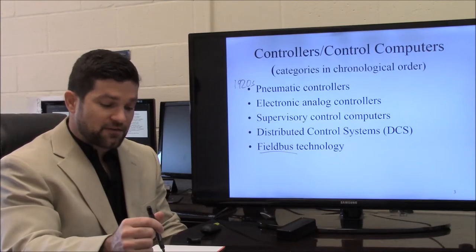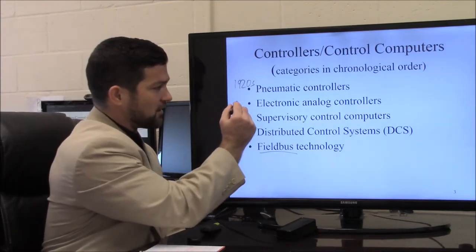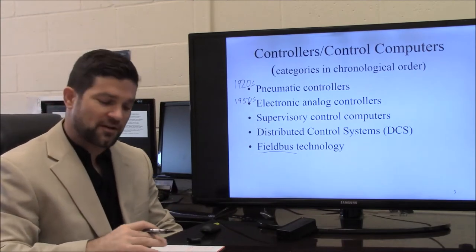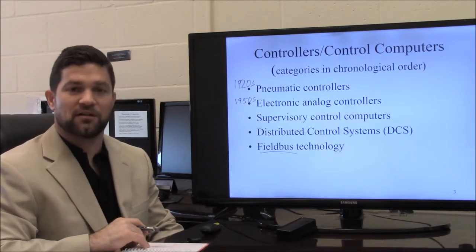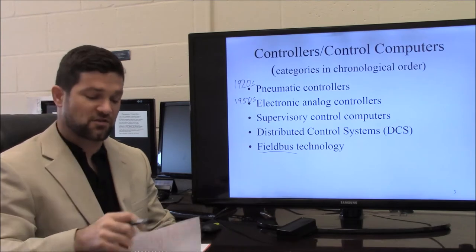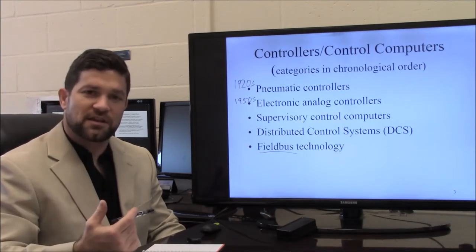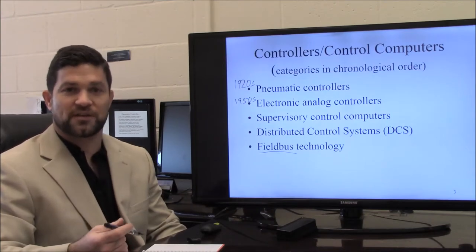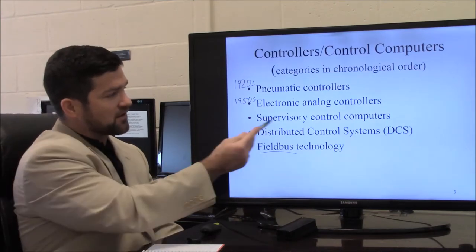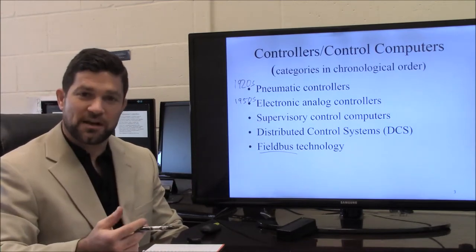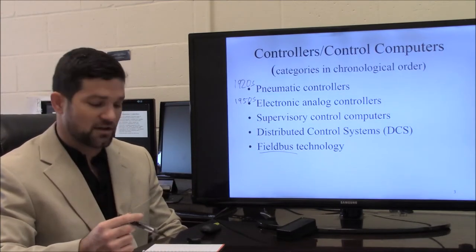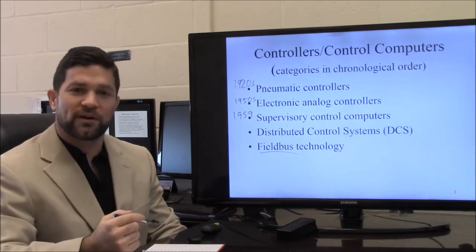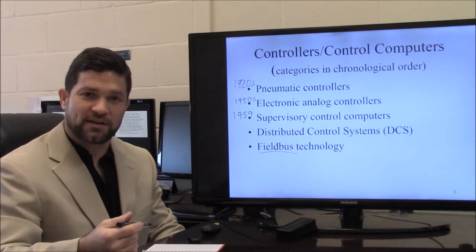In the 1950s, electronic analog components started becoming available with the development of transistors, resistors, and capacitors. Instead of using air signals through the plant, wires could be used to transmit signals. Supervisory control systems are essentially a combination of these electronic analog systems, and the first system was introduced in 1959, incorporated with oil refinery type processes.